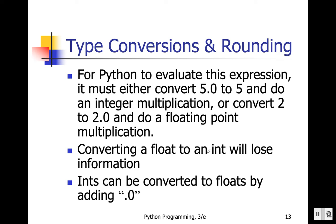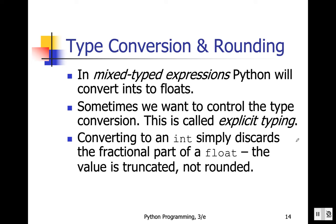Now, what happens if we convert a float to an integer? If the data is 10.0 and we convert a float to an integer, it is going to lose the decimal part — it loses the information in the fraction part. In a mixed-type expression, Python is going to convert ints to float.